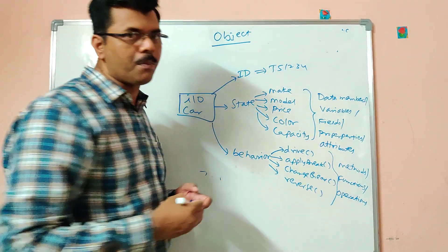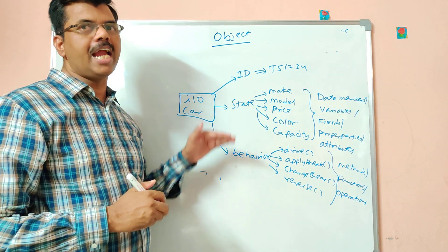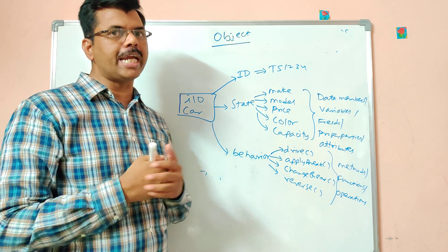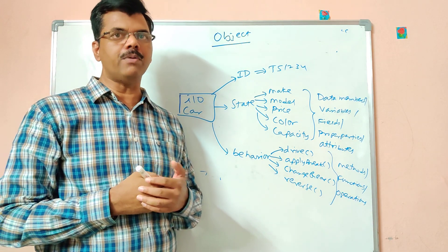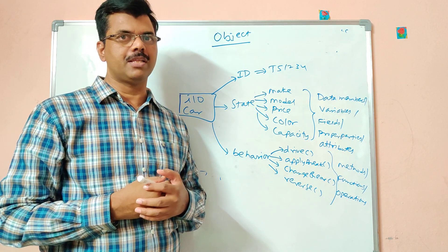So what is an object? An object is a real-time entity which has id, state and behavior. And in the next video we will be seeing about the next object-oriented feature about class. So that's about in this video. Thank you. Thank you all. Please like, subscribe and share. Thank you once again.